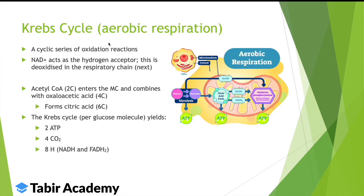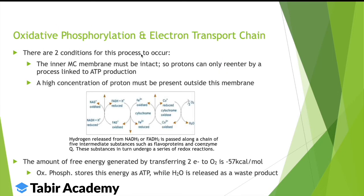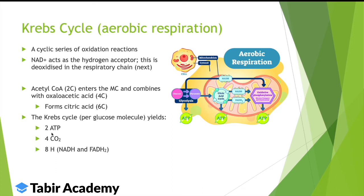The Krebs cycle only occurs in aerobic respiration and takes place inside the mitochondria. It's a cyclic series of oxidation reactions. Acetyl coenzyme A, a 2-carbon molecule from the link reaction, combines with oxaloacetic acid, a 4-carbon molecule. The product of these two is citric acid — a 6-carbon molecule.